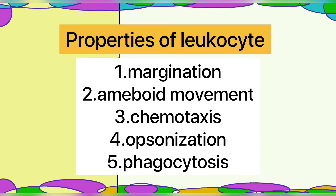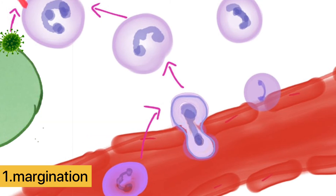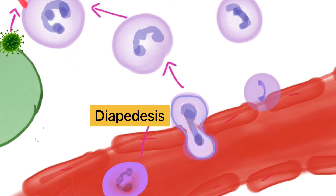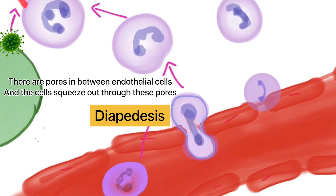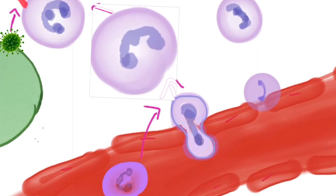The main properties of leukocytes include margination and diapedesis. Leukocytes are attracted to the endothelial surface by selectins — cell adhesion molecules found on blood vessel endothelial cells. This process of leukocytes adhering to the endothelial surface is called margination. The leukocytes then pass through pores in the endothelial cells and exit the blood vessel — this process is called diapedesis. The WBCs then move through tissue space using amoeboid movement by putting out pseudopodia.